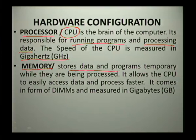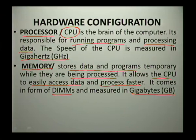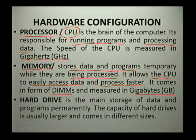The next hardware is what we call memory. Memory stores data and programs temporarily while they are being processed. It also allows the CPU to easily access data and process faster. Memory comes in the form of DIMMs and it is measured in gigabytes.